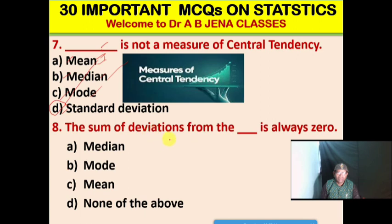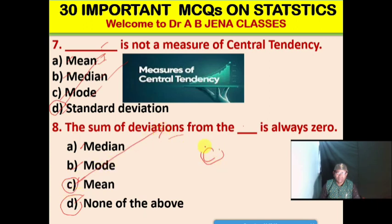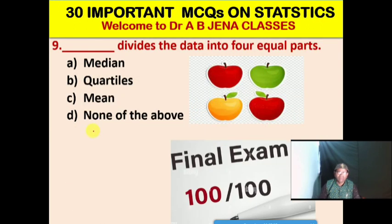Next MCQ: The sum of deviations from the dash is always zero. A. Median. B. Mode. C. Mean. D. None of the above. C is the right option. The sum of deviations from the mean is always zero.